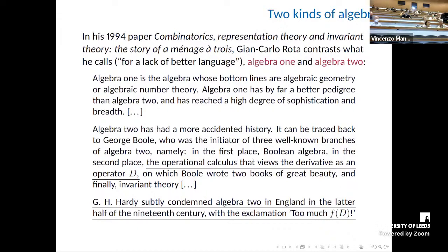Algebra 2 can be traced back to George Boole, who was the initiator of three well-known branches: Boolean algebra, the operational calculus that views the derivative as an operator D — which we've heard about in Anna's talk — on which Boole wrote two books of great beauty, and finally invariant theory. And Rota says G.H. Hardy sadly condemned Algebra 2 in England in the latter half of the 19th century with the exclamation 'too much f of D.' And he says G.H. Hardy must be turning in his grave.